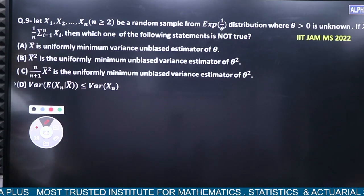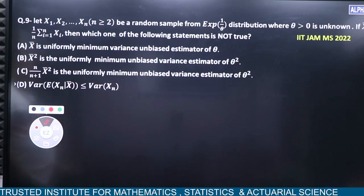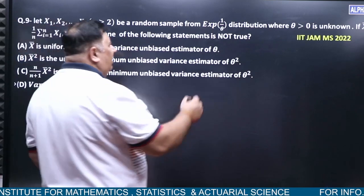X bar is UMVUE of unbiased estimator of theta. So, true. First, let's do that.